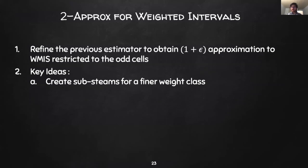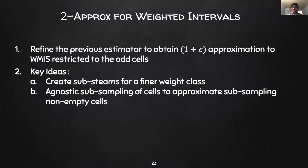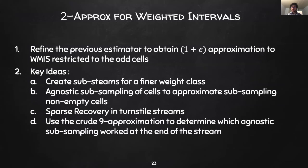We then diagnostically subsample cells at the beginning of the stream at various sampling rates to approximate sampling non-empty cells in each weight class. We then use sparse recovery to obtain accurate estimates of the non-empty cells. Finally, we use our 9 approximation which we developed previously to determine which diagnostic subsampling rate worked out at the end of the stream. For more details on how to put these techniques together, we recommend looking at the full version of our paper.